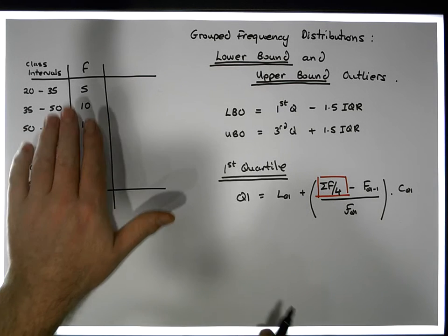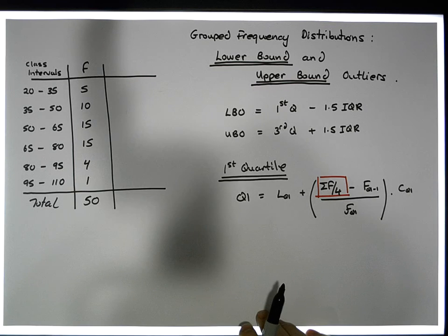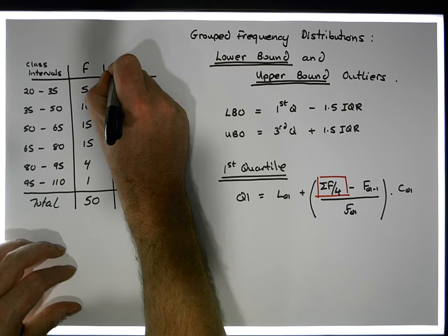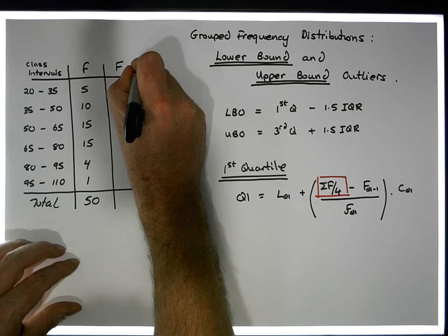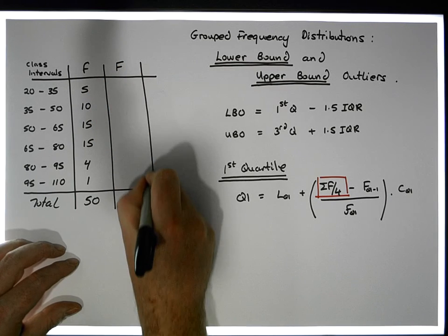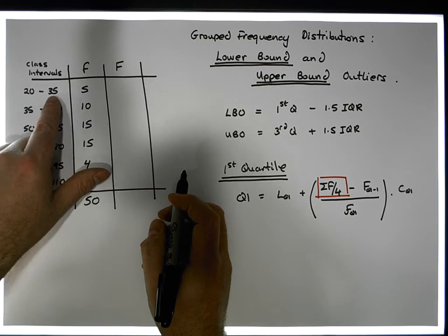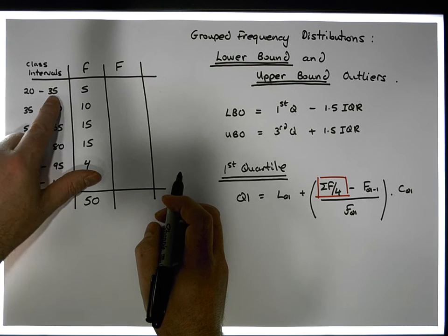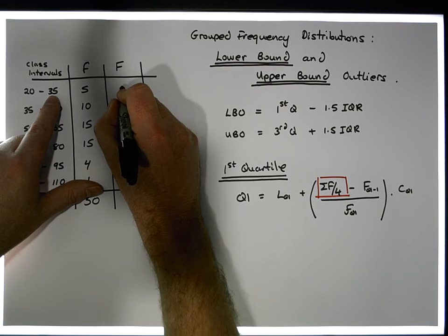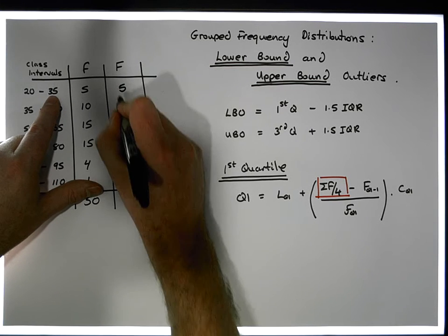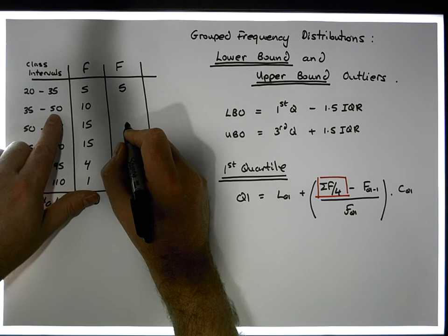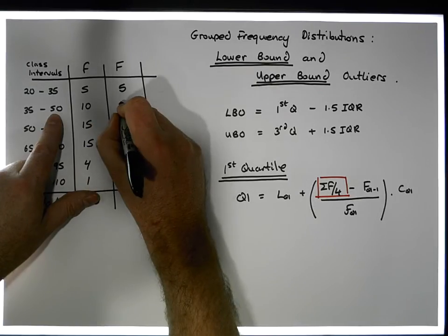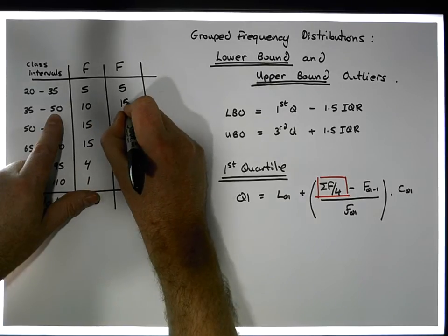But first of all, what we're going to do is create a cumulative distribution — our capital F column, our cumulative distribution — which is how many values are less than our upper bounds. So there are five values less than 45, so there's five here. How many are less than 50? There are 10 in this interval and the five previous, that gives us 15.